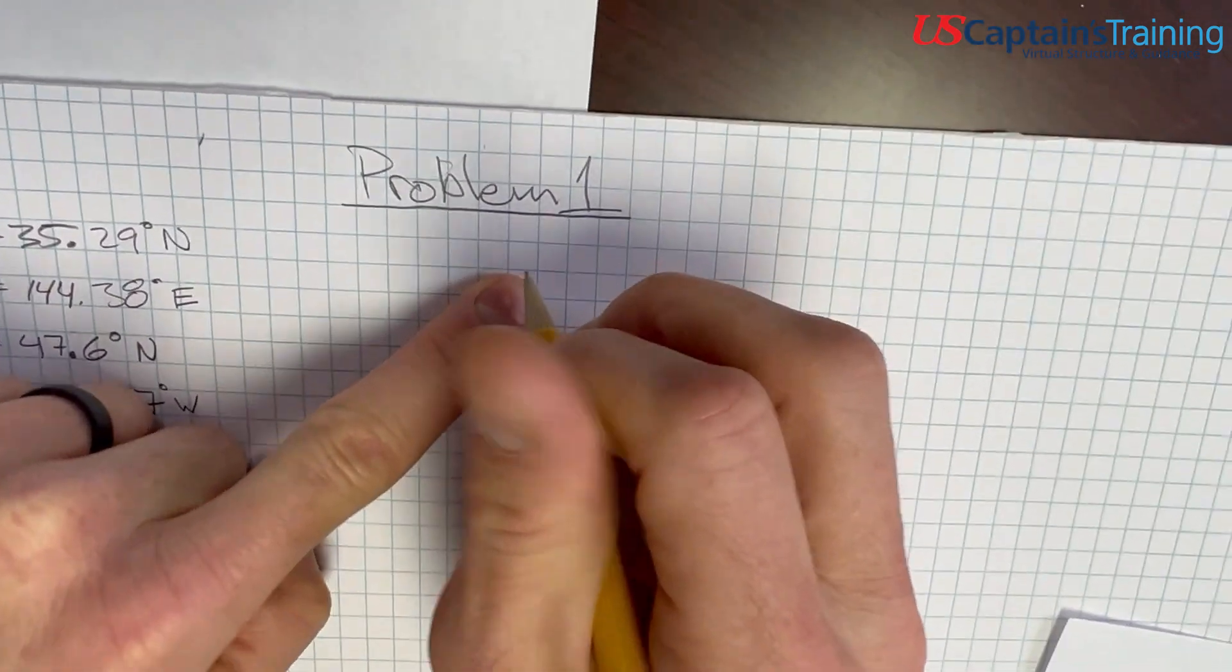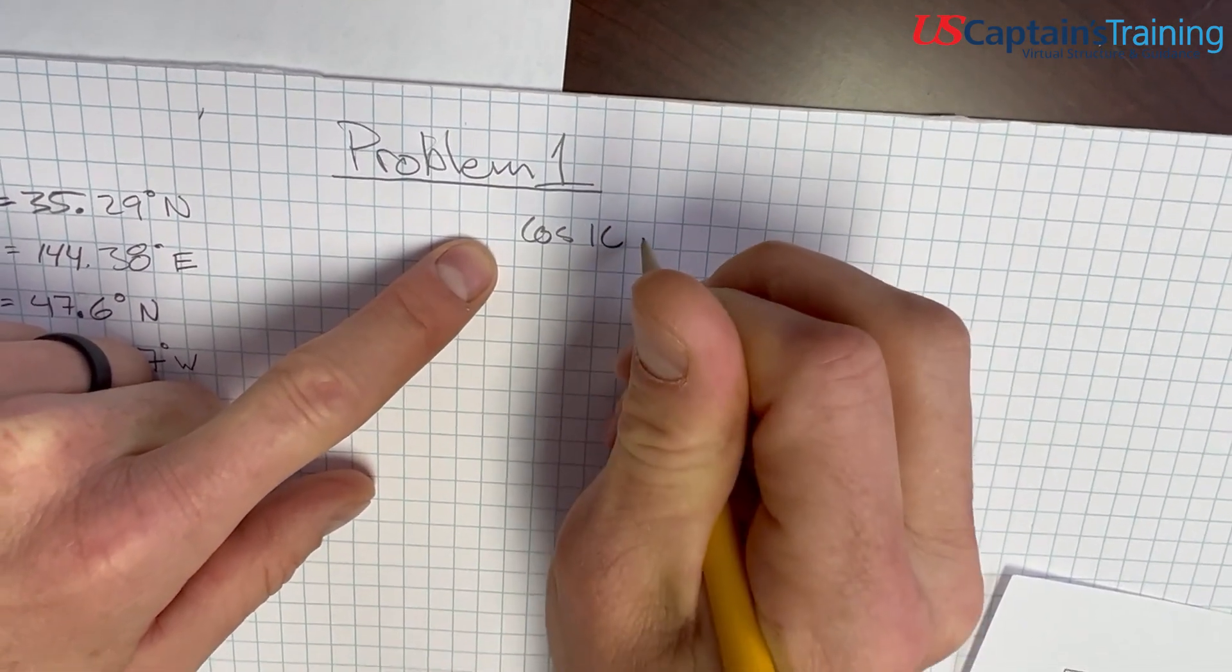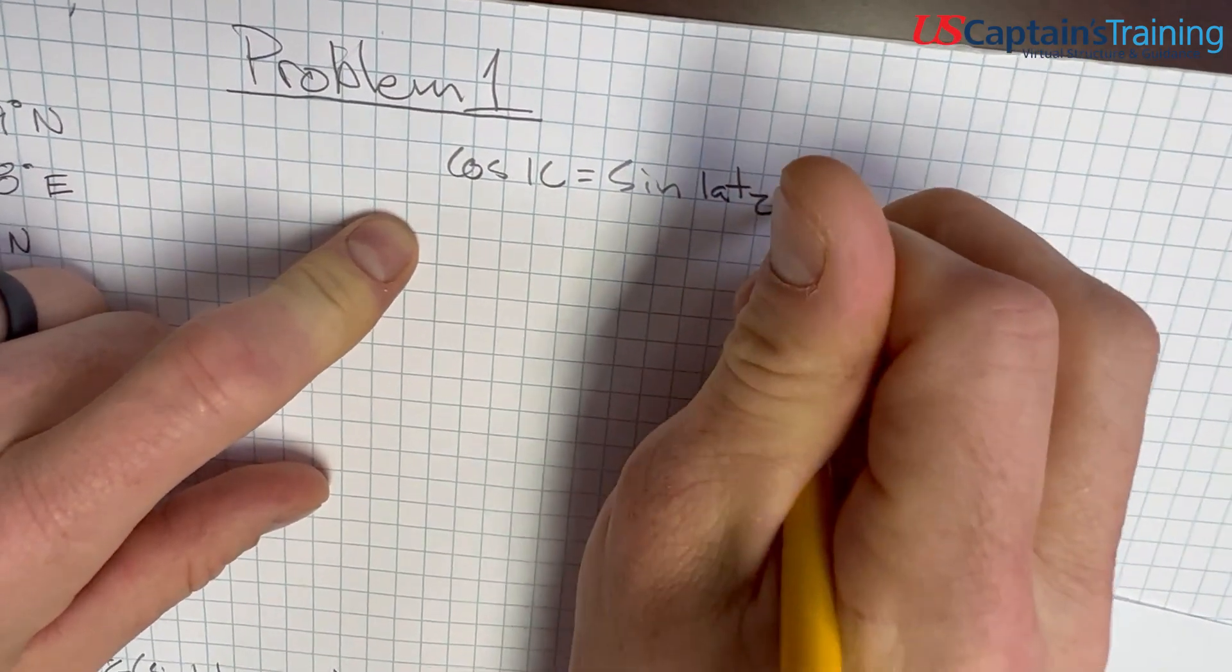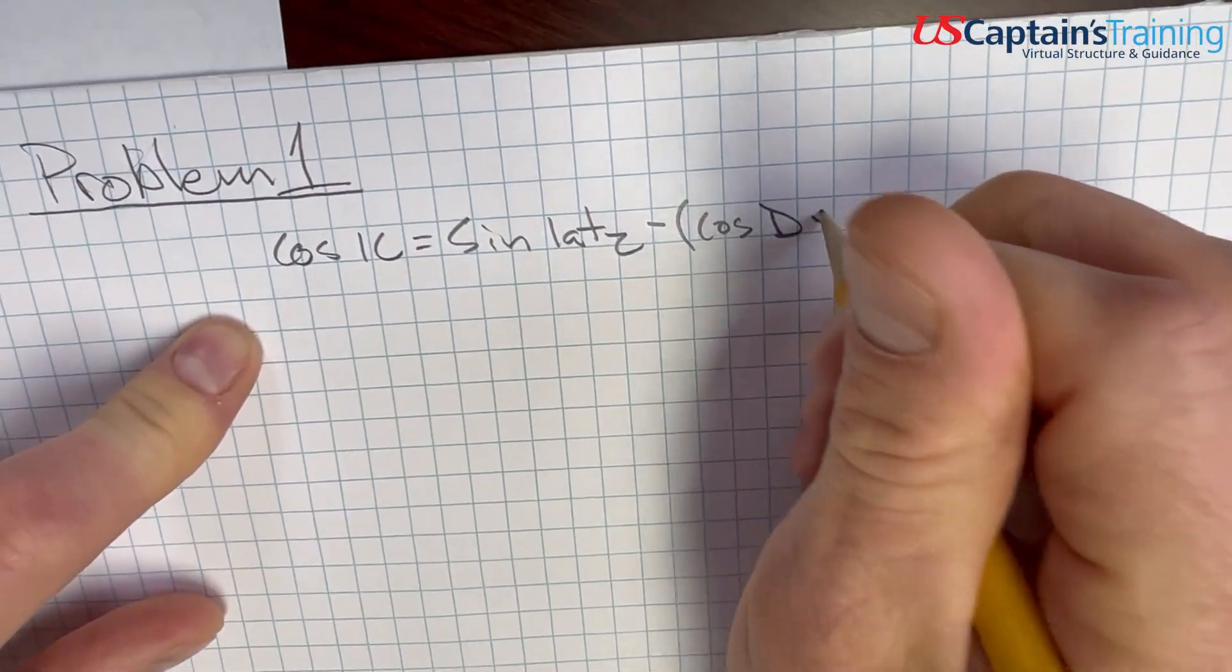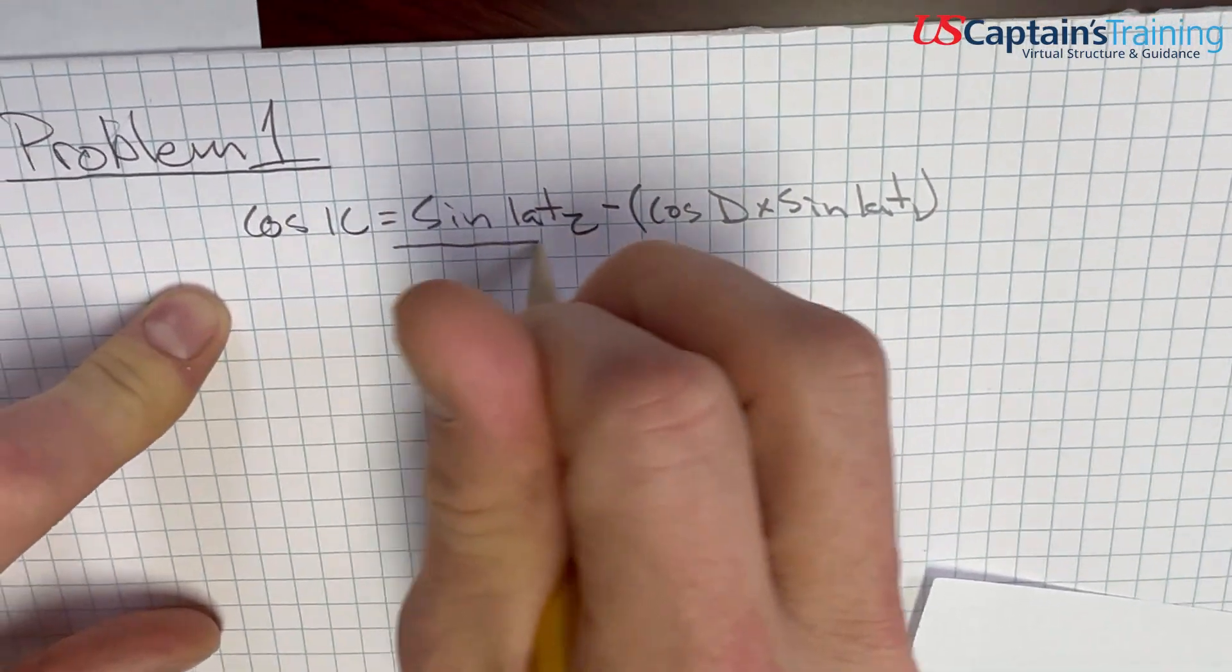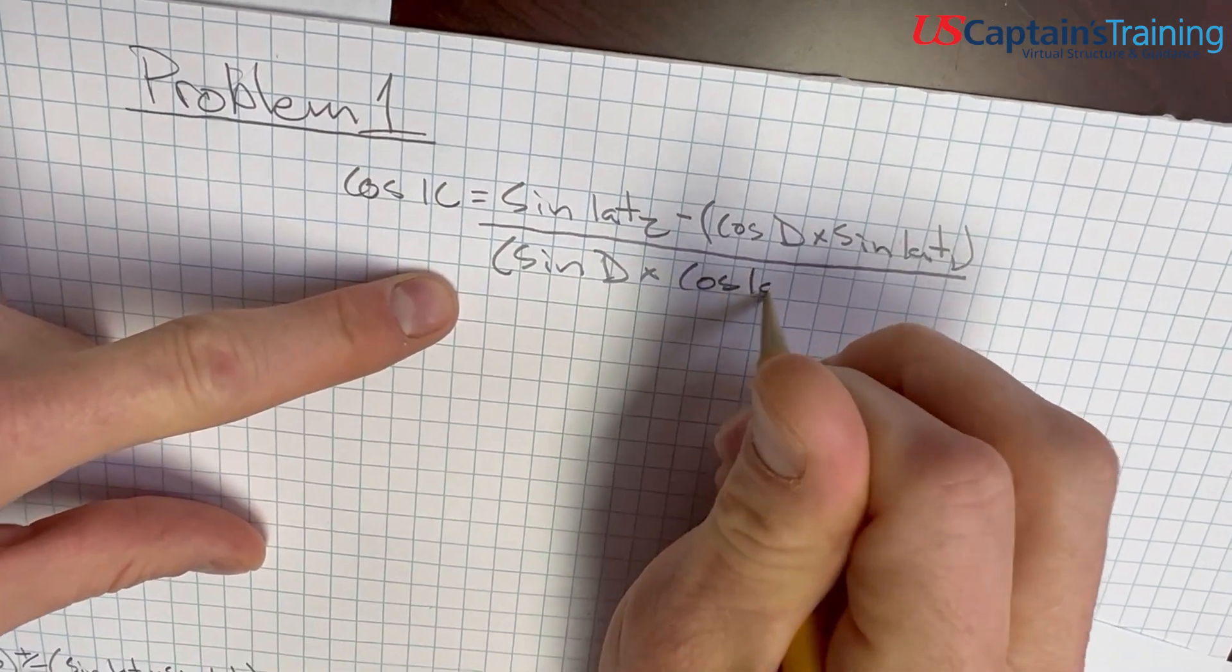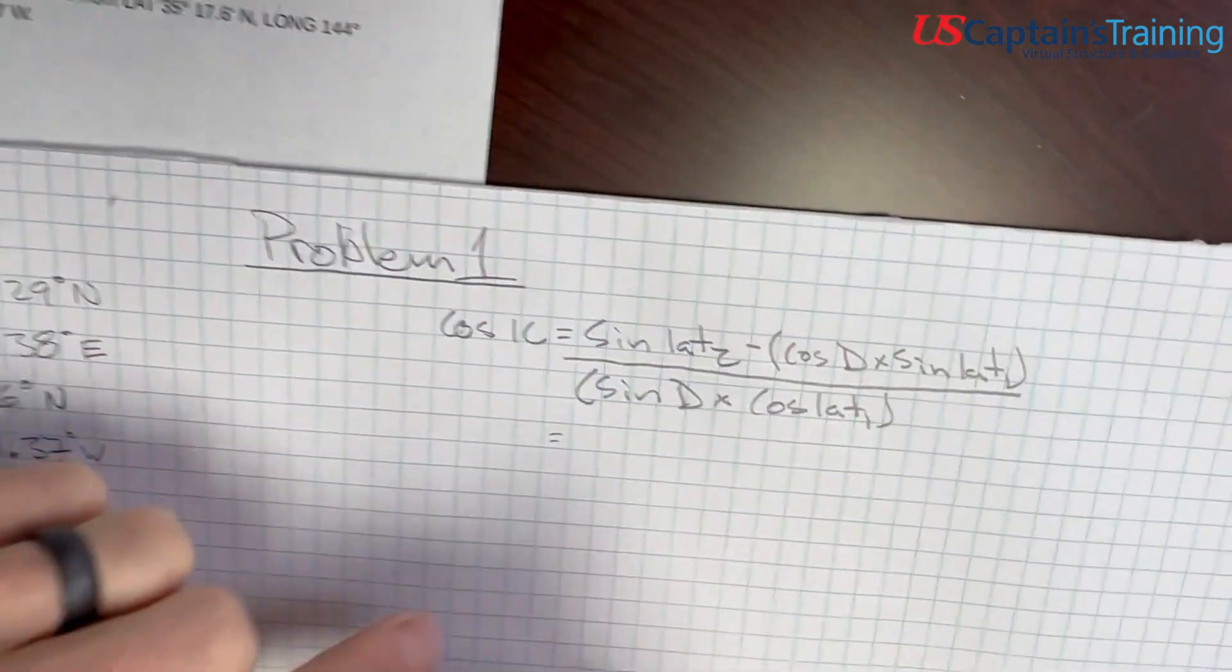So, we're going to say, here's the formula for initial course. Cosine of initial course, that's IC. I'm using the abbreviation initial course. Cosine of initial course equals sine lat 2 minus cosine distance in degrees times sine lat 1.